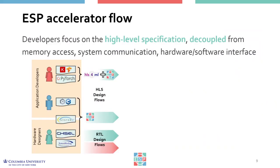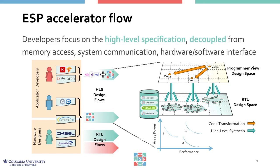With ESP, application developers and hardware designers can focus on the high-level specifications of an accelerator without worrying about issues of memory access, system communication, accelerator invocation, and hardware-software-accelerator integration in the SOC. With the ESP design flows that leverage high-level synthesis tools, developers can explore the design space by combining high-level code transformations and HLS knob settings. This design space exploration produces a rich library of alternative Pareto-optimal implementations, each offering a different cost-performance trade-off point, and each can be seamlessly integrated into an ESP system.